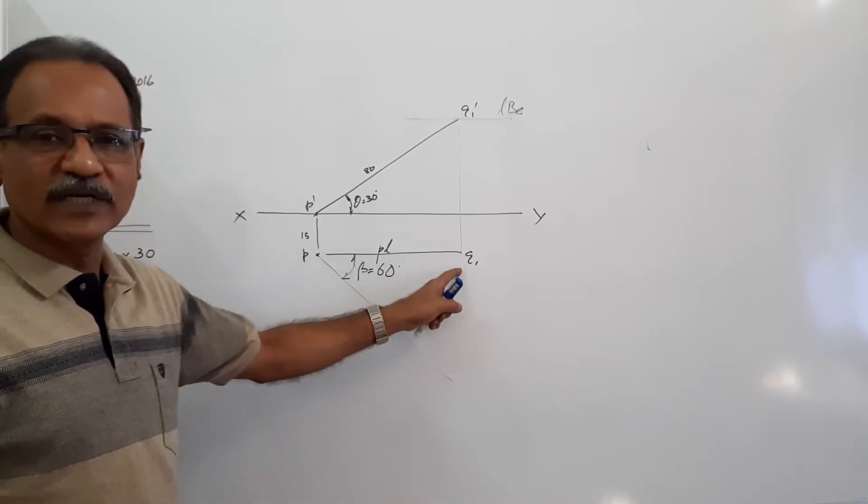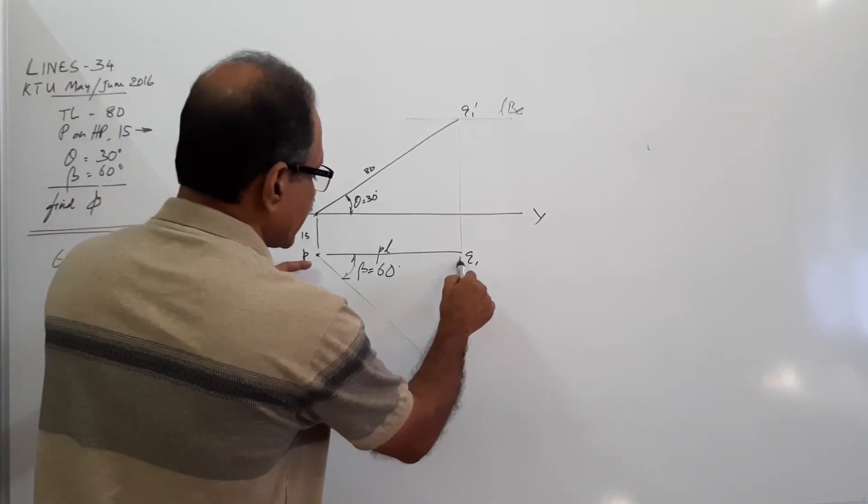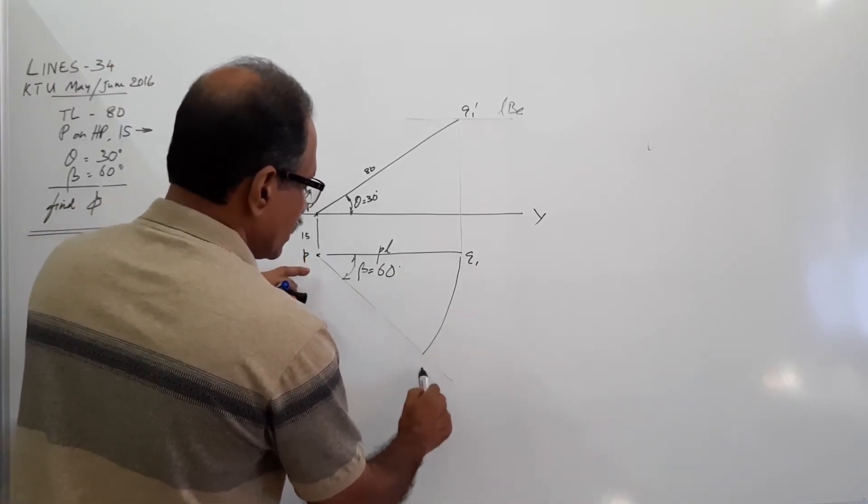The plan length is this much. So where is Q? Q: P as center, PQ1 as radius, cut an arc. Q.